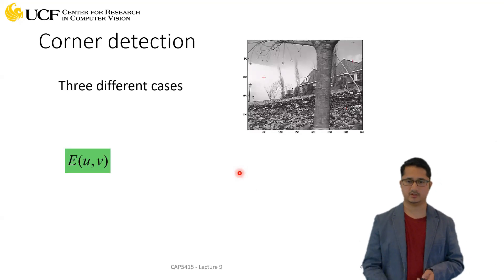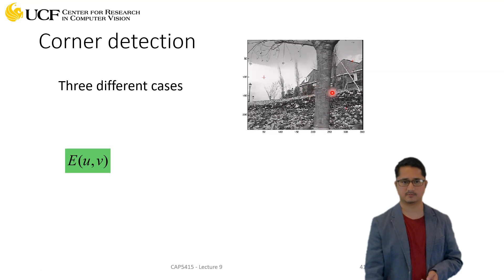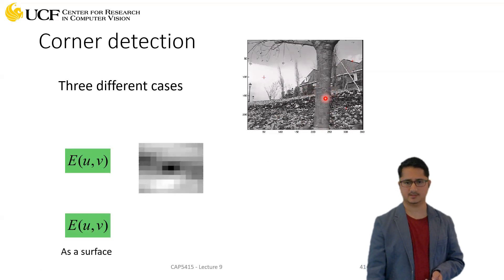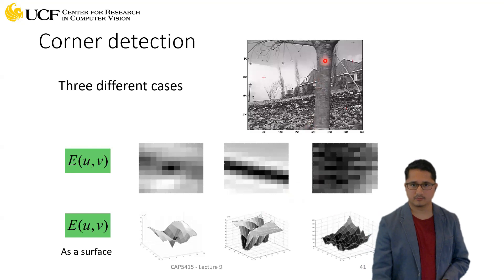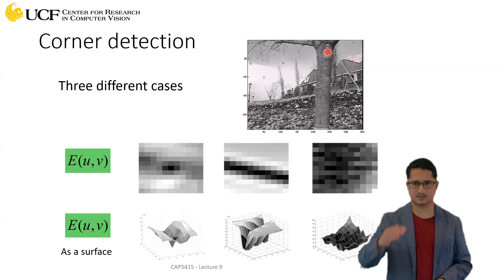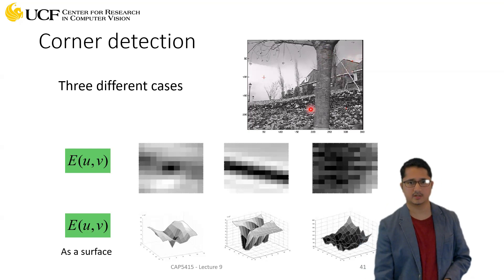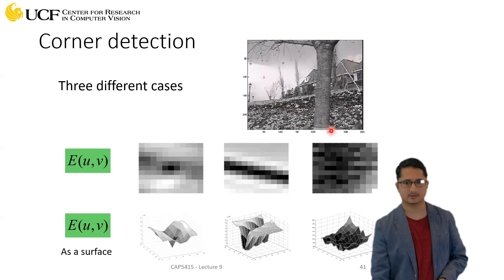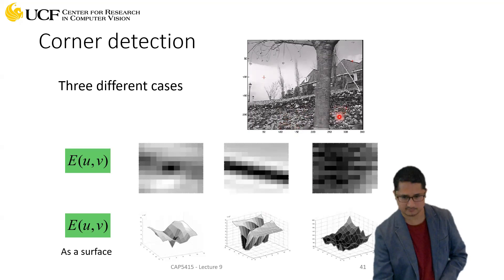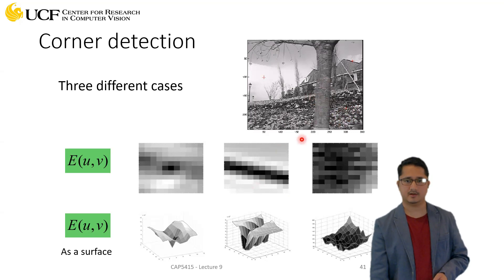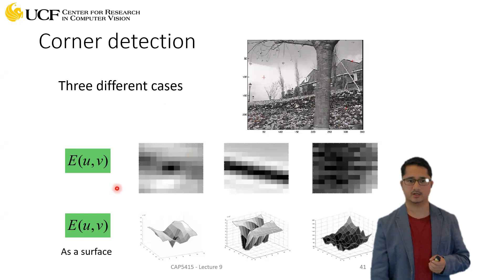We can use this autocorrelation to find corner detection. Let's focus on a real-world image and look at three different cases. We have three different points: one at the edge of the roof, one over the clouds, and one over some leaves on the ground. We compute the autocorrelation equation shown earlier, and these are the responses for these three different locations.